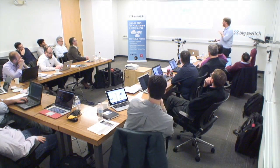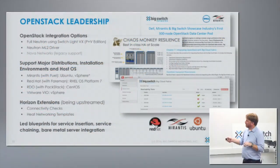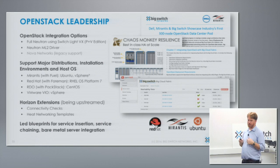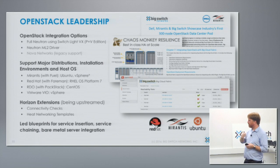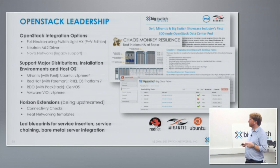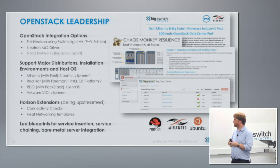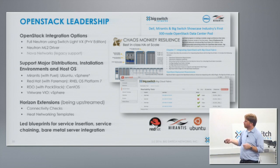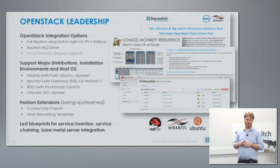We do a lot of work in OpenStack. We have a team working on our Neutron plugin that works with our vX edition — the vSwitch edition. We have an ML2 driver for Neutron and we also support Nova networking. We've got a great white paper about our resiliency at scale, and we work with all the major OpenStack distributions. We've even got some extensions into the Horizon graphical interface that we're starting to upstream.